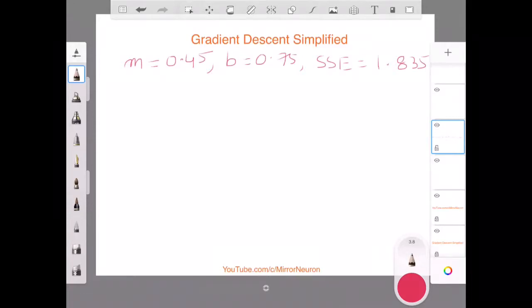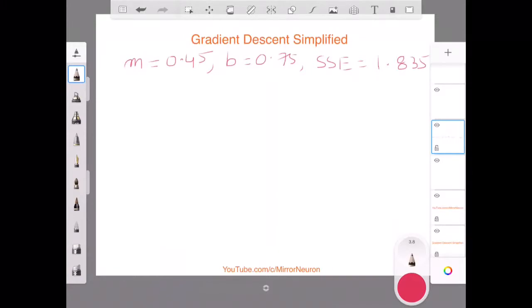Hello friends, welcome back. From my previous step, I used m equals 0.45, b equals 0.75, and I got an SSE sum squared error as 1.835.